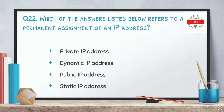Question number 22: which of the following answers refers to a permanent assignment of an IP address? The options are private address, private IP address, dynamic IP address, public IP address, and static IP address. The correct answer is static IP address. When you assign a static IP address it is permanent unless you manually change it, as opposed to a dynamic address assigned through DHCP, which can change automatically.